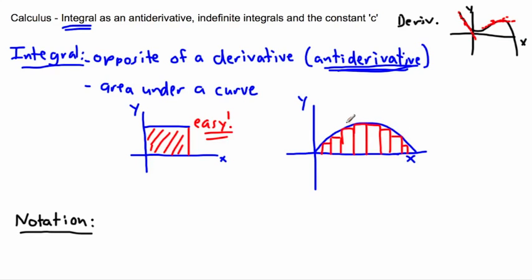The idea behind integration is that you take an infinite number of infinitely small rectangles. Doing an integral is going to be a tool, just like before we had a trick to find the slope of a graph at any point — now we're going to find the exact value of the area under a curve, not just an estimate. If I took a billion rectangles, or even an infinite number of really small rectangles, I would get closer and closer to the real area. That's the idea behind an integral.